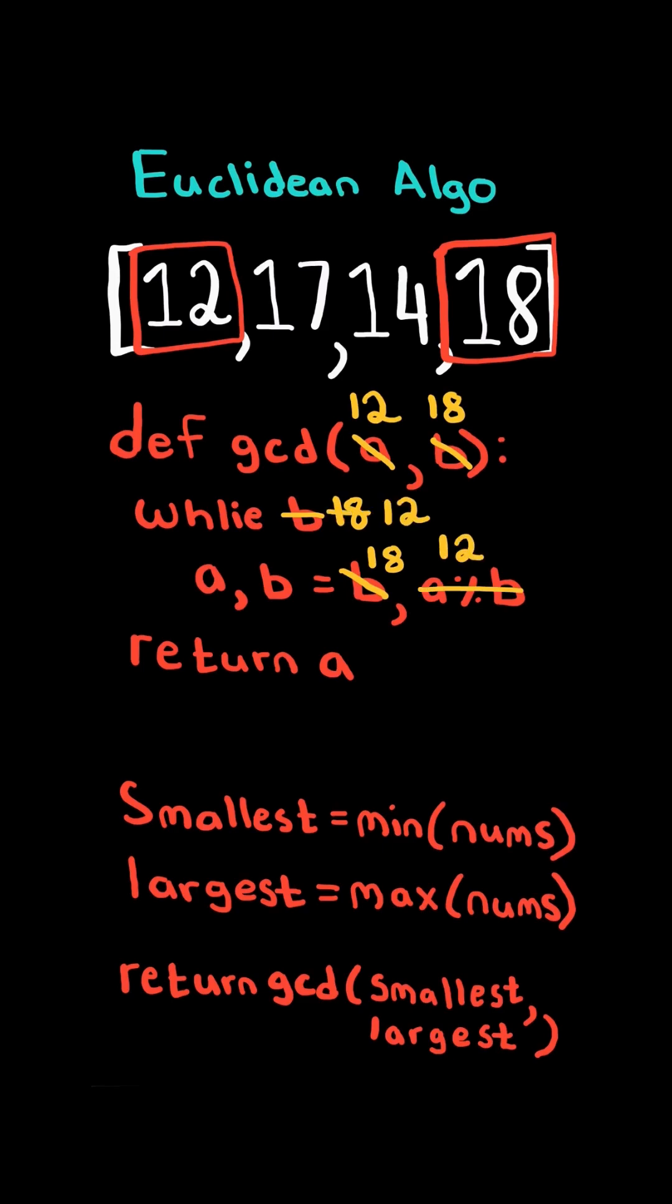In the second iteration, b is 12. In the third iteration, b is 6. Finally, b equals 0. We exit the loop and return a, which is 6.